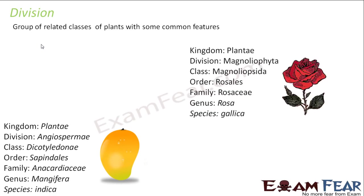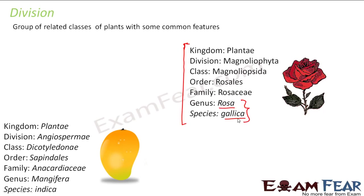Group of related classes of plants with some common features. For example, here we are considering a rose and a mango — two different plants of different species. When we talk about binomial nomenclature, that was only these two terms. The binomial name for a rose will be Rosa gallica — the genus and the species. But if you want to know the entire scientific classification of a rose, this is how you will write it: the kingdom it belongs to, the division, the class, order, family, genus, and species. This is the complete scientific classification of a rose.